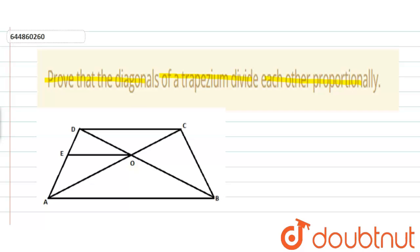Now let trapezium ABCD in which AB is parallel to DC, and its diagonals AC and BD intersect at O.